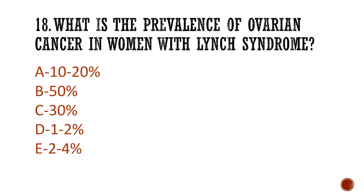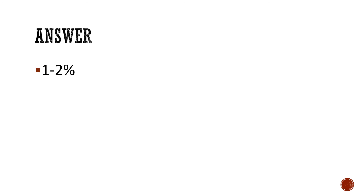Question 18: What is the prevalence of ovarian cancer in women with Lynch syndrome? Is it A) 10–20%, B) 50%, C) 30%, D) 1–2%, or E) 2–4%? The answer is 1–2%.